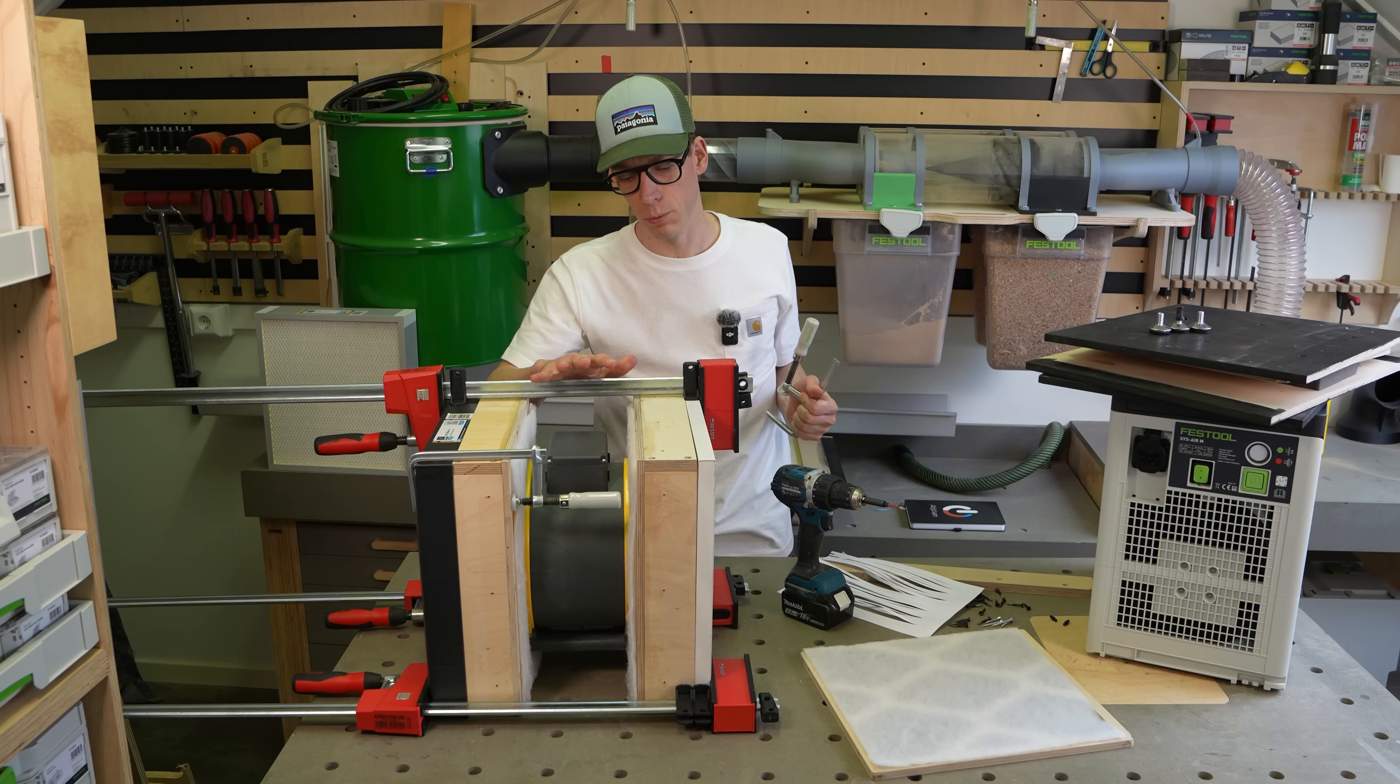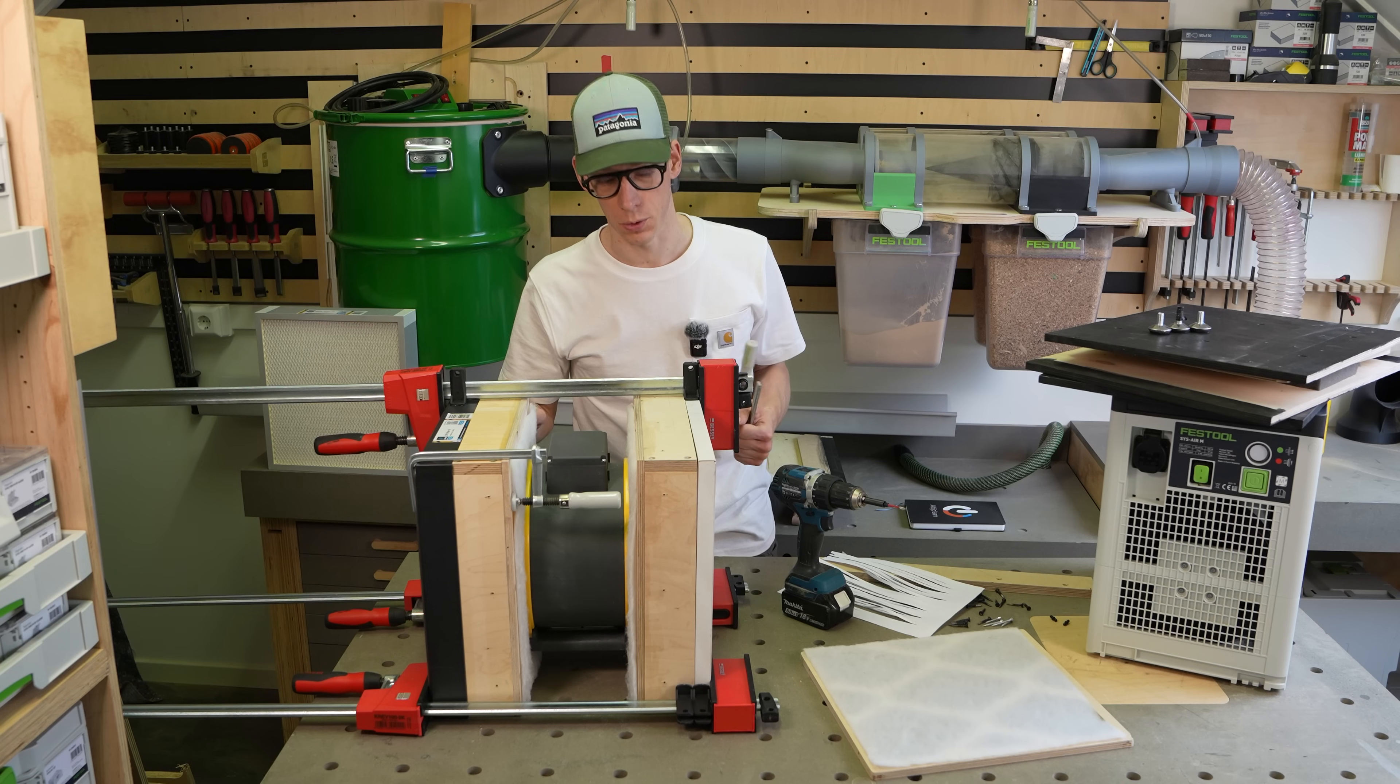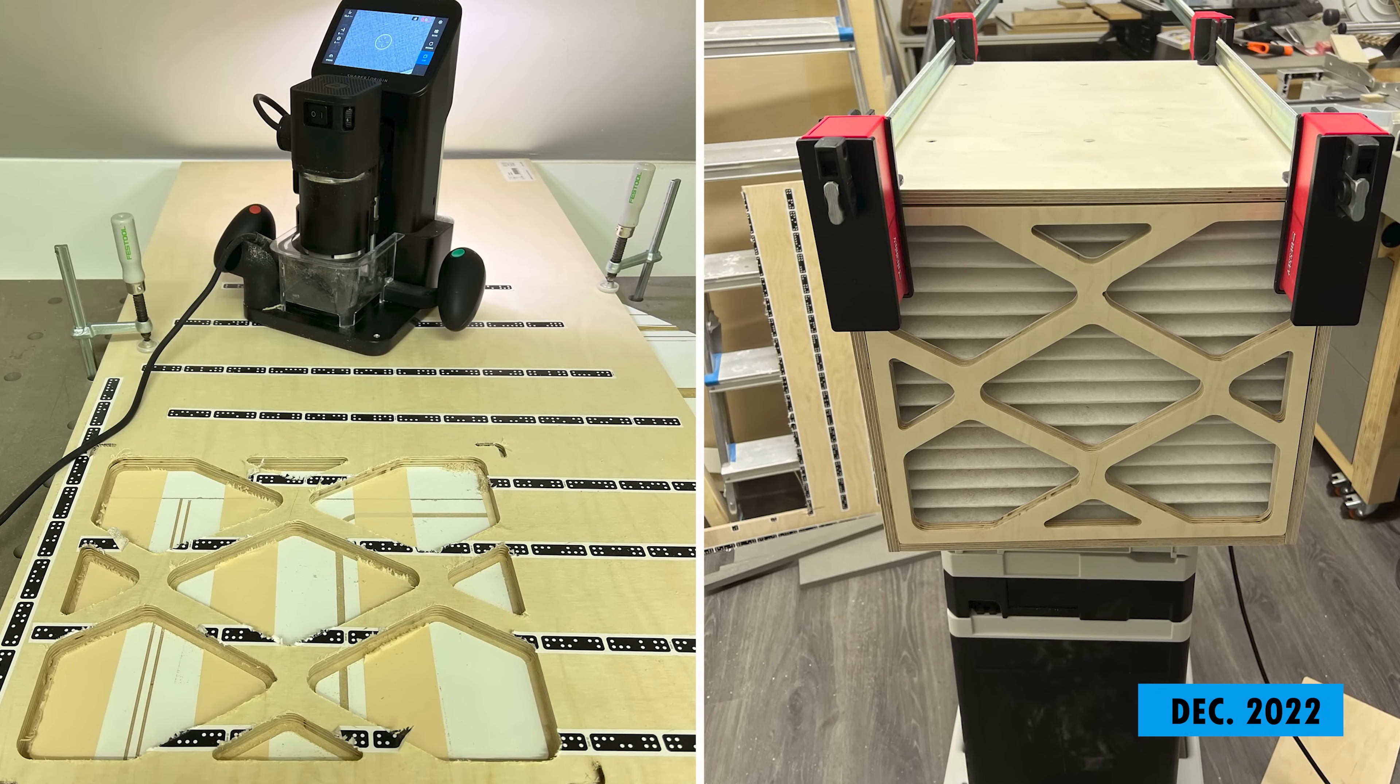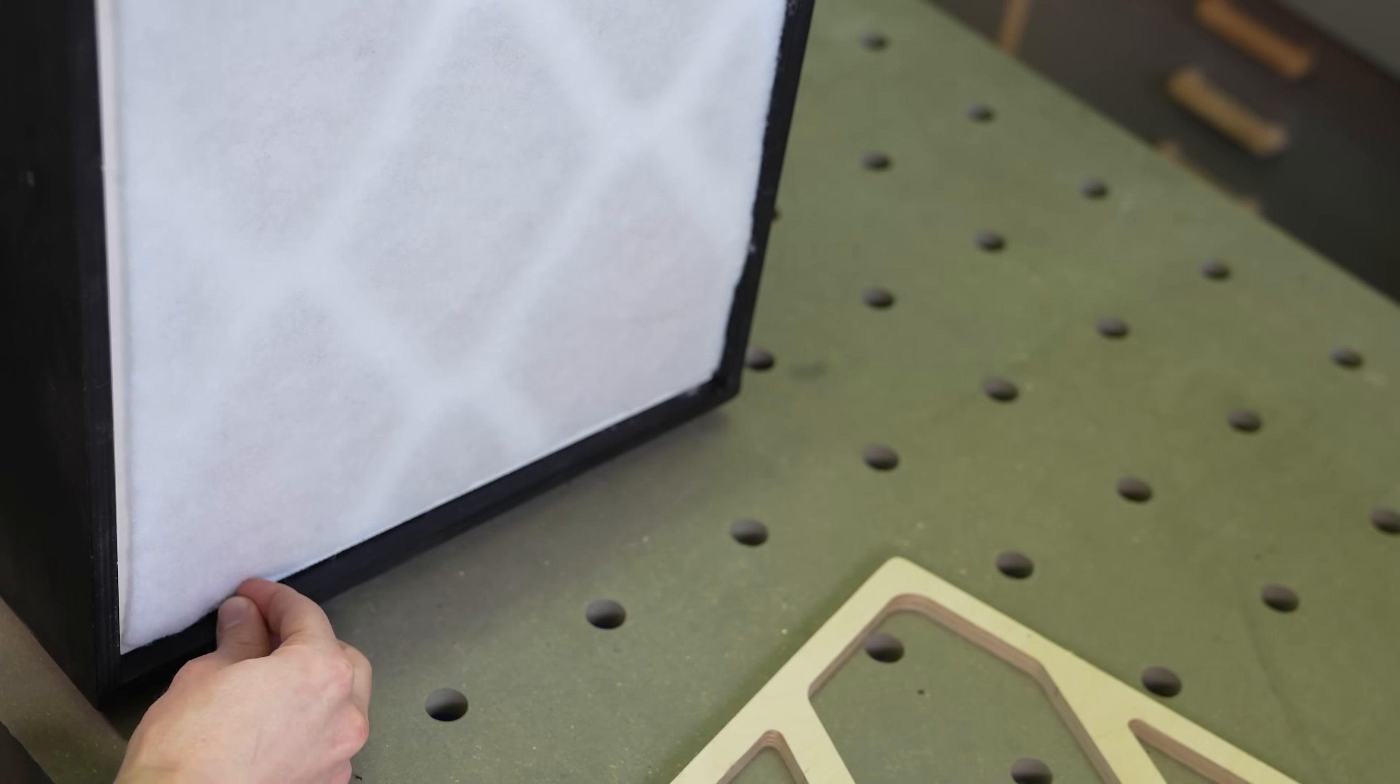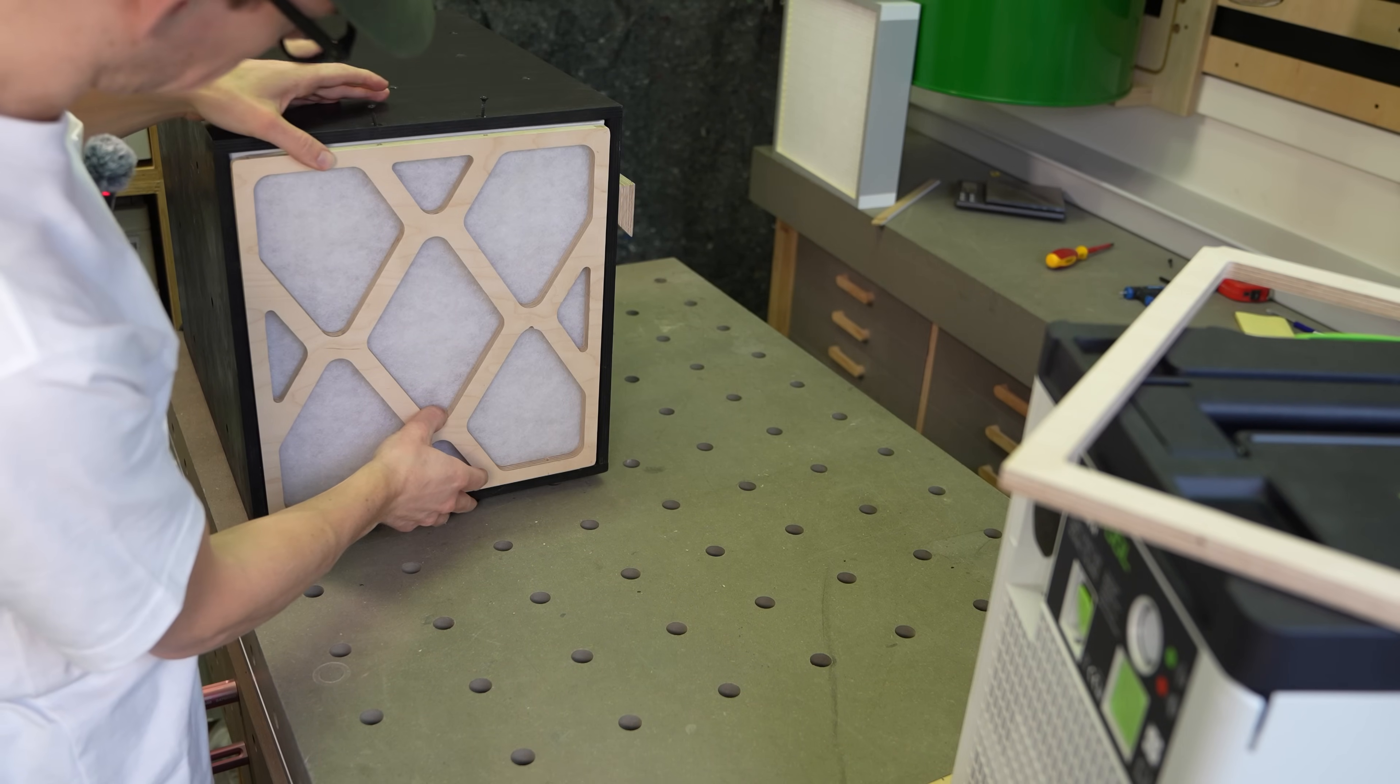Time to move on and assemble the box so we can start the separation test and learn more about the capabilities of the different filter setups. For the cover I matched the pattern of the first filter for optimal flow. And I used shelf supports on the bottom for easy fixation in the box, so the filters can be removed easily.